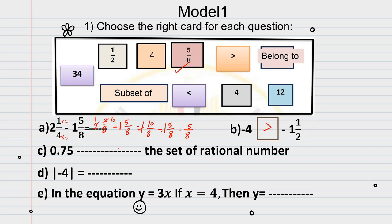What about this one? 0.75 to the set of rational number. And here we have belong to or subset of. What is the difference between belong to and subset of? Belong to is between a number and a set. What about subset of? Subset of is between set and another set. Set means group of numbers. Here I have just a number. So, 0.75 belong to the set of rational number.